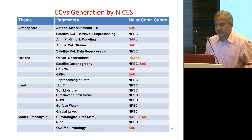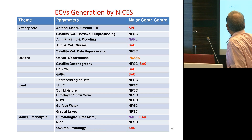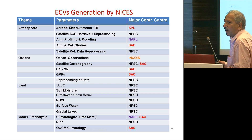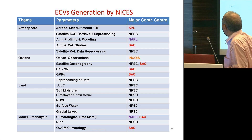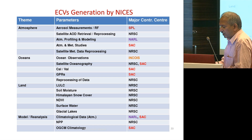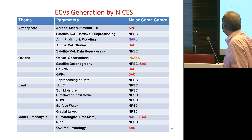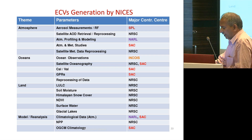Coming back to the ECVs — for all these ECVs, data is now being generated. We have around five to six centers at ISRO which provide information on atmosphere, oceans, land, and models. The Ministry of Earth Sciences through COAS also provides information regarding oceanic observations.